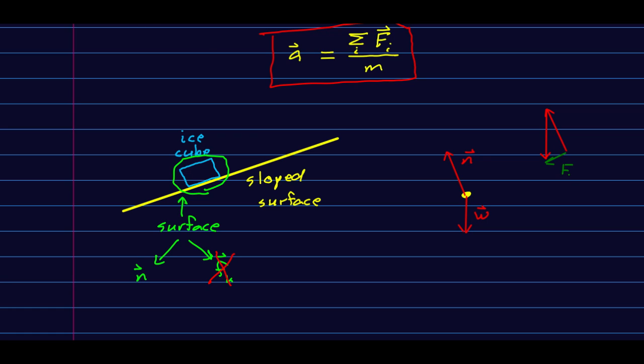And so there's our F net. F net points down the slope. And so that's the direction the ice cube will accelerate.